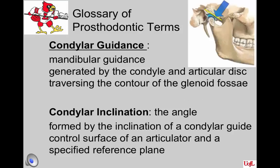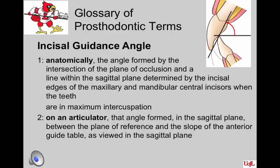From the Glossary of Prosthodontic Terms: condylar guidance is defined as mandibular guidance generated by the condyle and articular disc traversing the contours of the glenoid fossa. Condylar inclination is the angle formed by the inclination of the condylar guide — the control surface of an articulator — and a specified reference point.